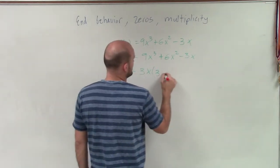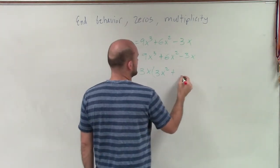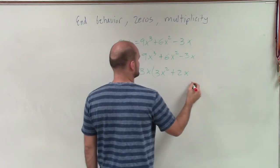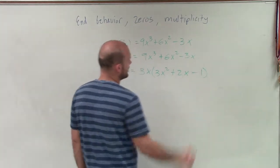So by factoring out a 3x, I now obtain 3x times 3x squared plus 2x minus 1.